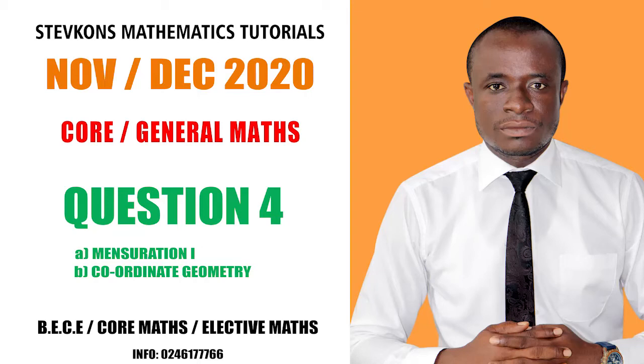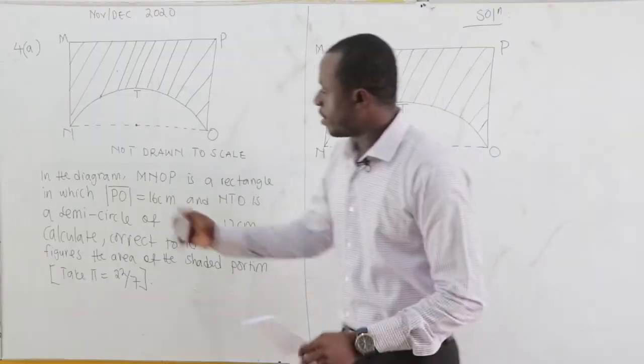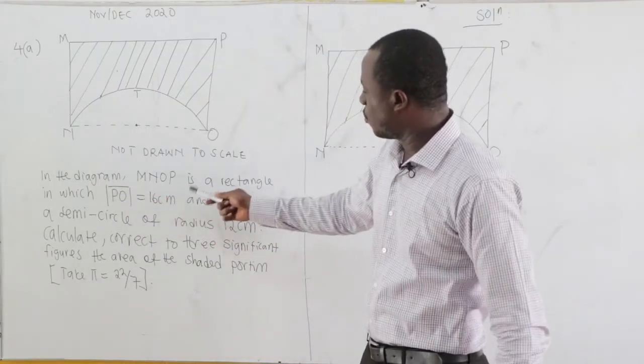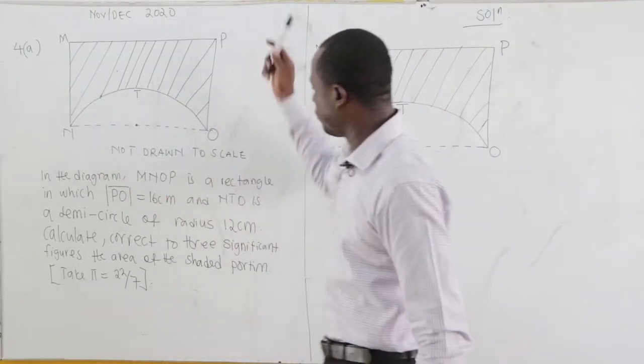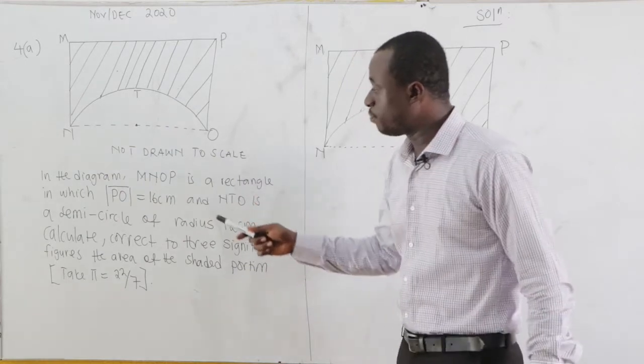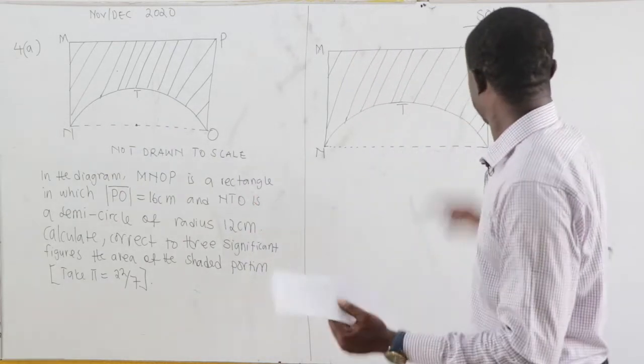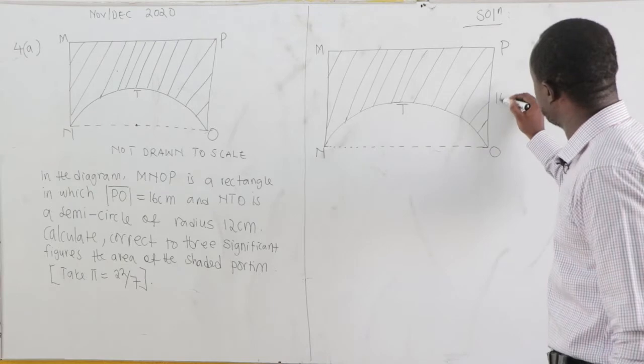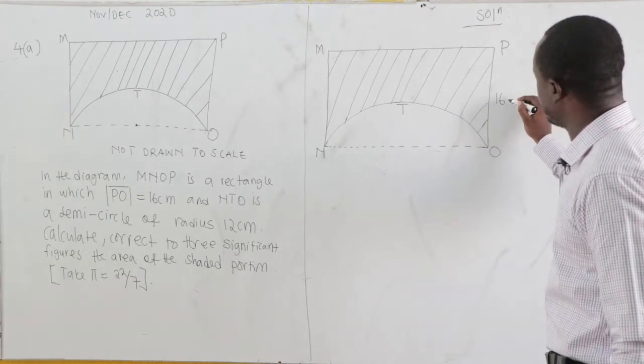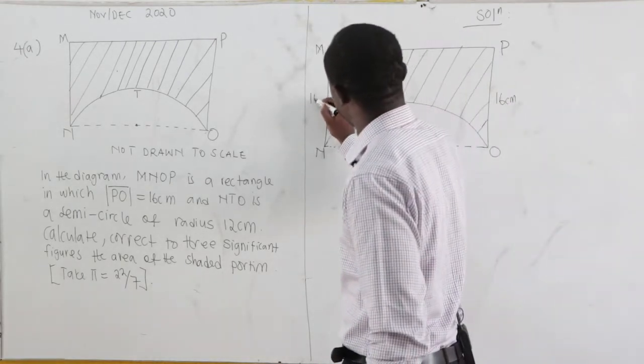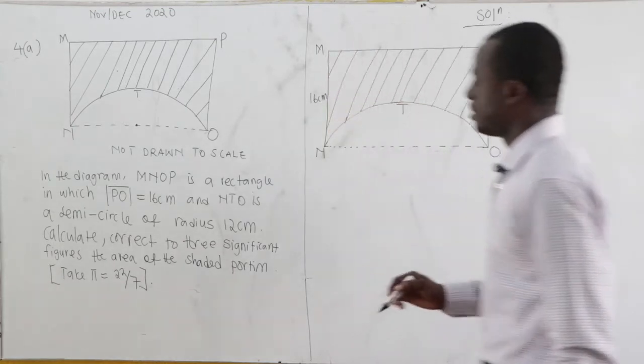Now let's consider this particular one. That is Novdeq 2020, question number 4a. We have been told in the diagram MNOP, it's a rectangle in which PO is 16. So we have been told PO is 16. So if this is 16 cm, because it's a rectangle, this side is 16 cm.